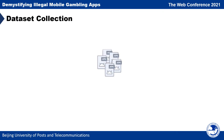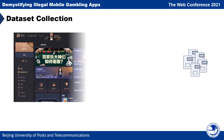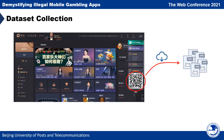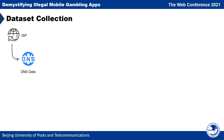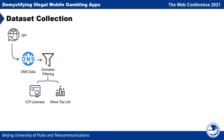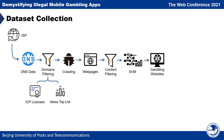First, let's collect some gambling apps. Illegal gambling apps can be downloaded from their corresponding websites, so we designed an effective method to download them from gambling websites. It contains two steps: identifying illegal online gambling websites, and then downloading apps. To get more gambling websites, we obtained DNS data from a major ISP in China. With this data, we first filtered domains using ICP licenses and the Alexa top list, then crawled the remaining domains. After filtering, we used an SVM classifier to identify illegal gambling websites, and finally downloaded apps from them.